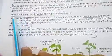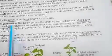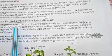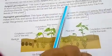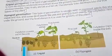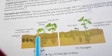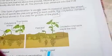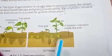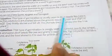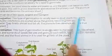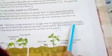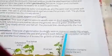Germination may be of two types: epigeal and hypogeal. In epigeal germination, the cotyledons are pushed above the ground — when the seed germinates, the cotyledons move outside. In hypogeal germination, the cotyledons remain under the ground. Epigeal germination is usually seen in dicot seeds — seeds with two cotyledons — while hypogeal germination is usually found in monocot seeds — seeds with a single cotyledon.